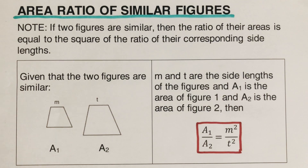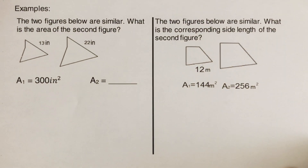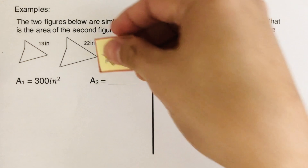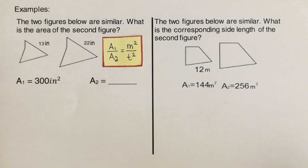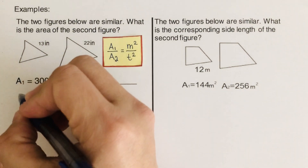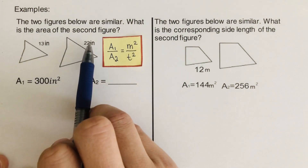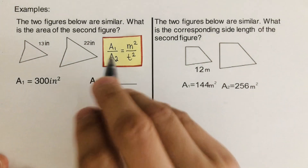Now let's have an example to better see this formula. I have written the formula for area ratio here, so we can use it in solving this problem. Area one is 300 — I'll use this equation. This is our M and this is our T, and these are our first and second areas. We just plug them in.